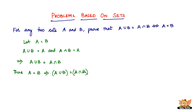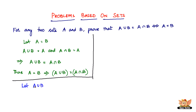Now let's come at it the other way around. Let A union B equal to A intersection B. So now if these two are equal, we have to prove that A equals B.